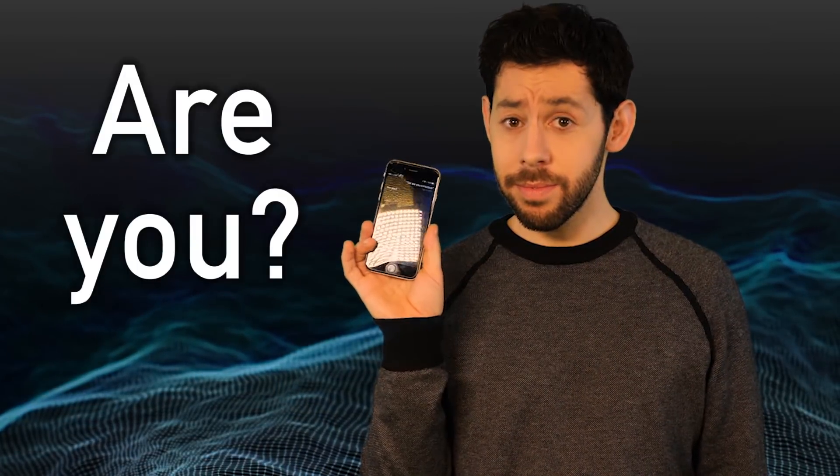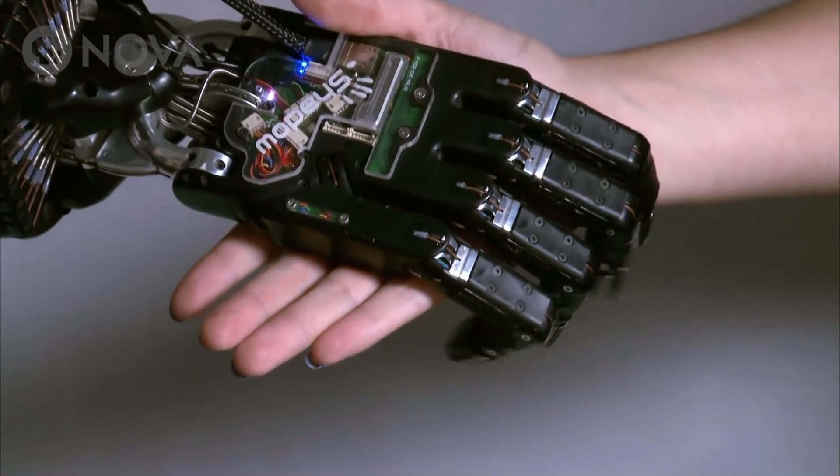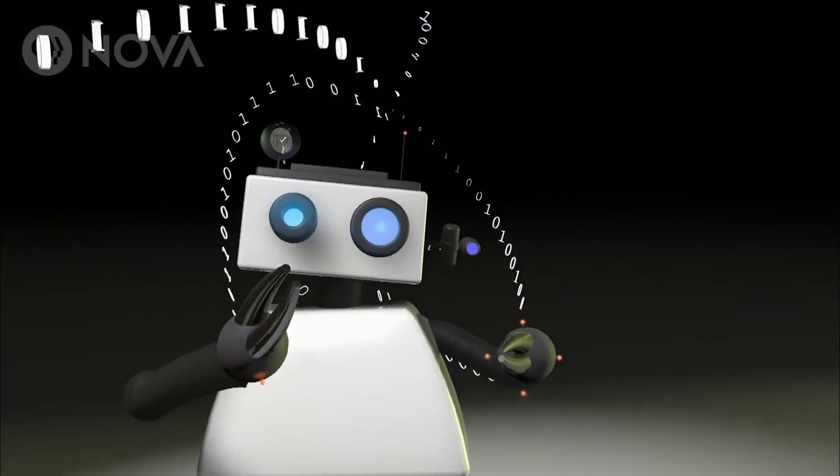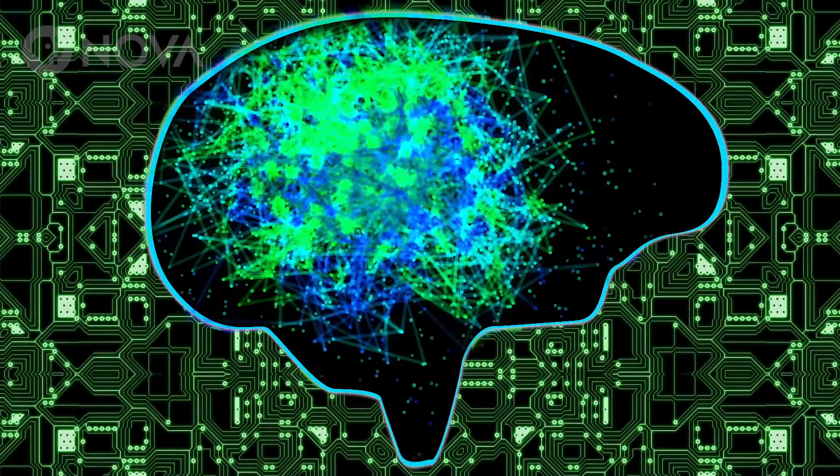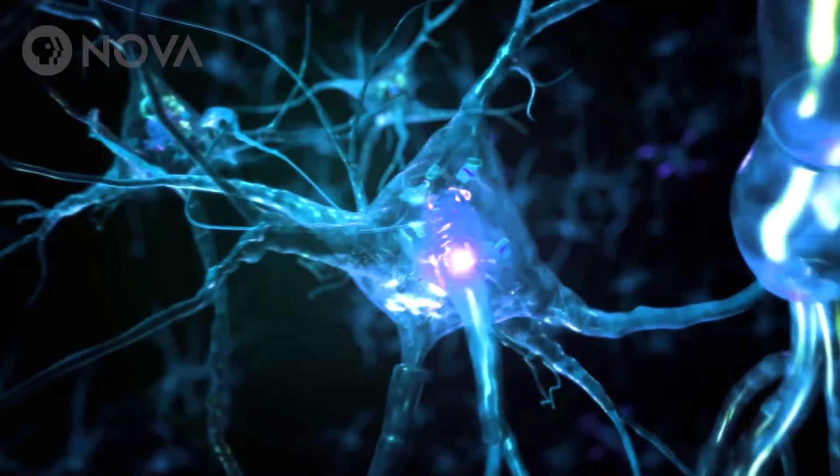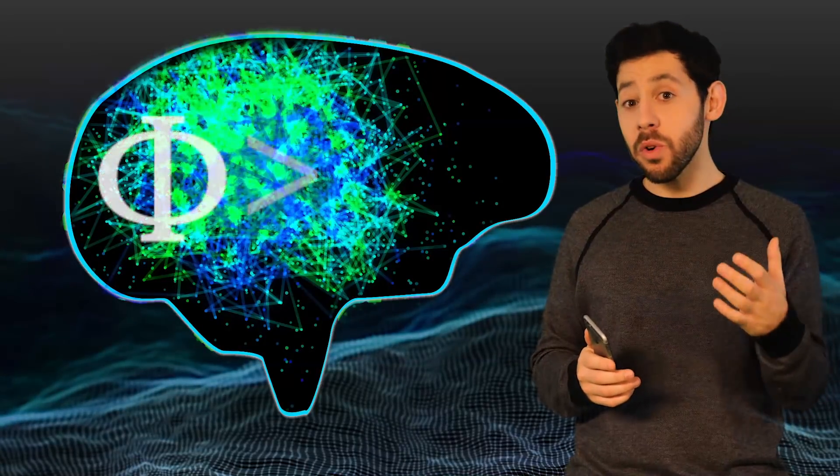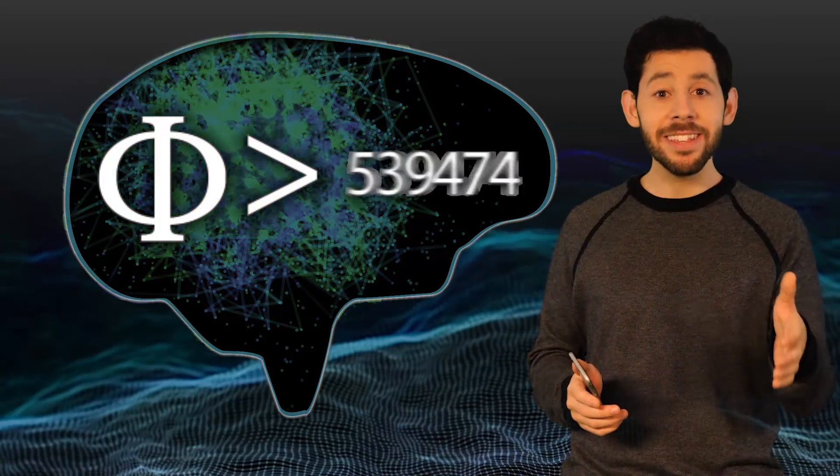Siri, are you conscious? Are you? Why is she avoiding the question? In IIT, for something to be as conscious as a person, it would need circuitry that's massively interconnected. Because humans have about a hundred billion neurons, and a single neuron could connect to thousands of others. Humans have a value of phi that's so large it hasn't even been calculated.